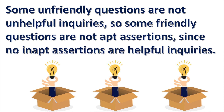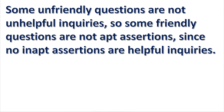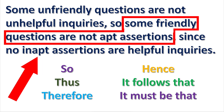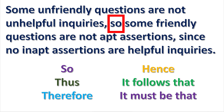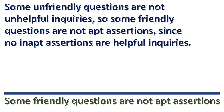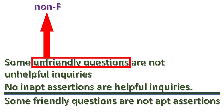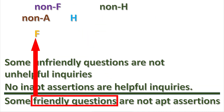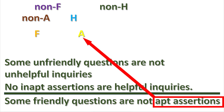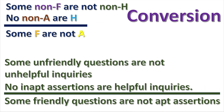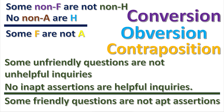Now look at this syllogism. First, we find the conclusion. Look for indicator words — the conclusion indicator word in this syllogism is the word 'so'. Write the conclusion on the bottom and the premises above. Next, symbolize the argument by replacing the terms with letters. Then we reduce the terms by using conversion, obversion, and contraposition.